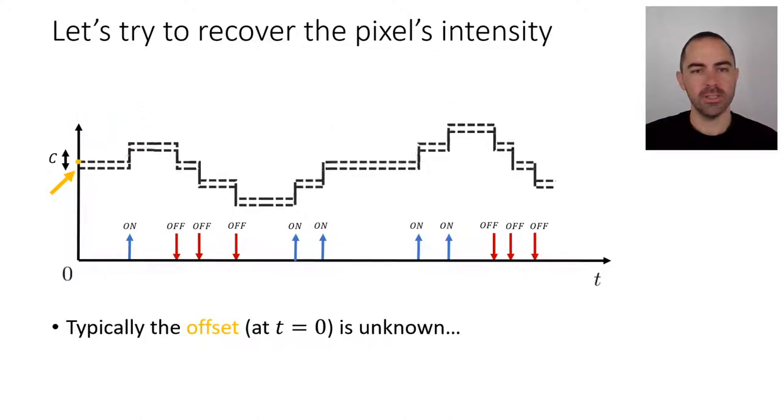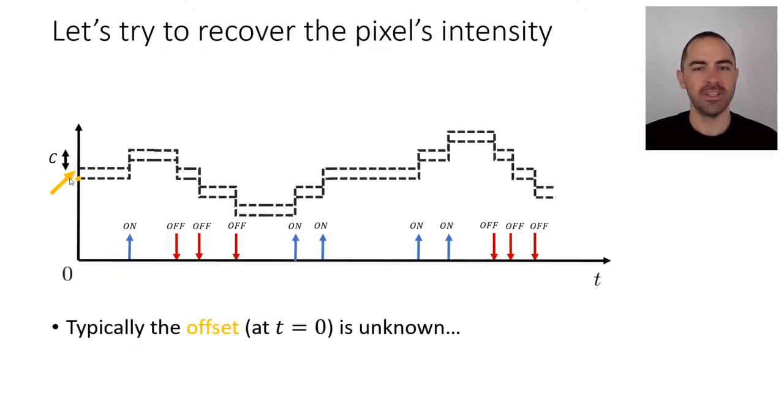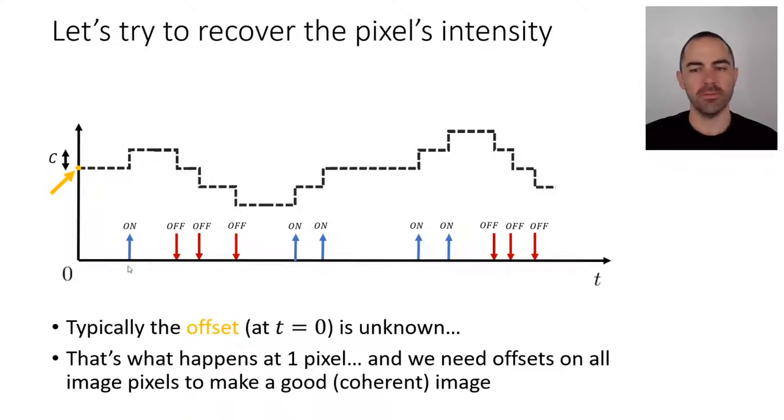So what does it mean? Well it means that it could be that signal or any other signal because we are free to choose the offset and all these signals they are consistent with the events, right? So that's really a problem because integration might work but this is for one pixel. What happens when we have multiple pixels then? Well ideally if we want to have a coherent image we need to know what these offsets are for all pixels in the image.